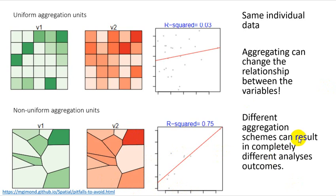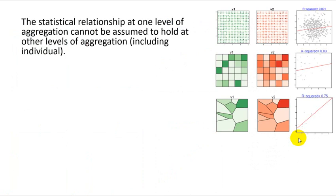This should be putting up huge red flags for you. Hopefully you've seen this many times before, and this isn't the first time that you've heard of the modifiable aerial unit problem. You need to be very aware of this. The statistical relationship at one level of aggregation can't be assumed to hold true for other levels of aggregation, including going down to the individual level. That's called the ecological fallacy.